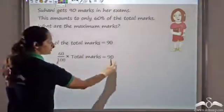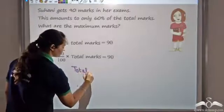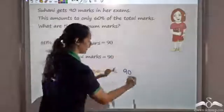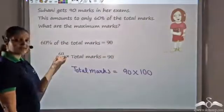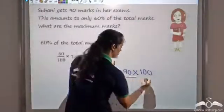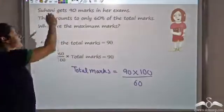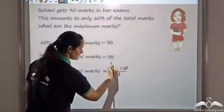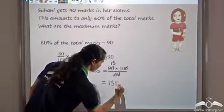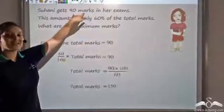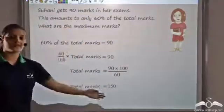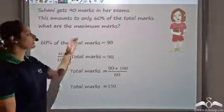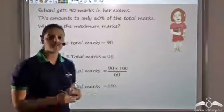Now we can find total marks from here. I can cross-multiply: 100 goes to the other side, so total marks equals 90 times 100 divided by 60. Simplifying — 90 divided by 60 gives 1.5, times 100 — this gives 150. So the total marks that Suhani scored were 90 out of 150. So 90 out of 150 makes it 60 percent of the total marks. You can say she scored 90 out of 150, or she scored 60 percent of 150 — that is one and the same thing.